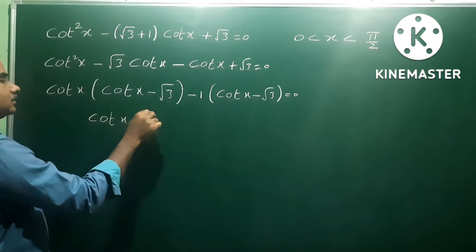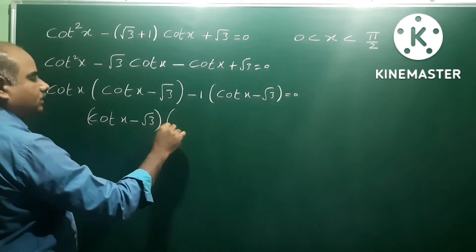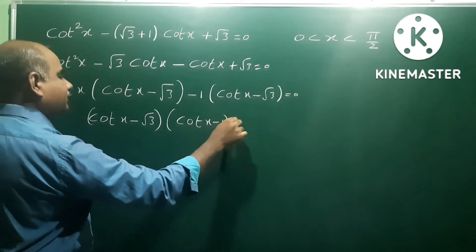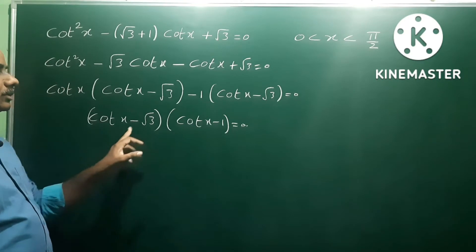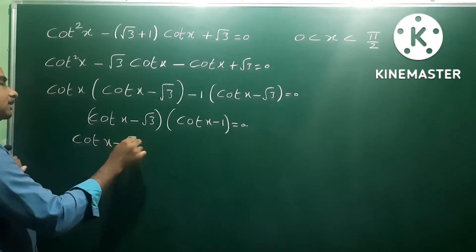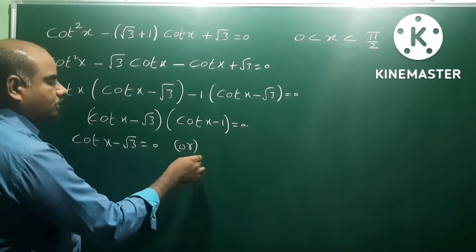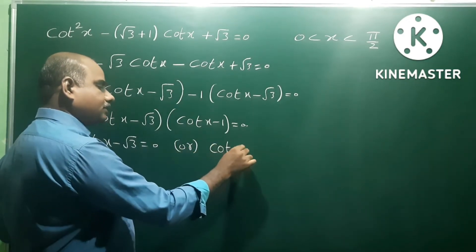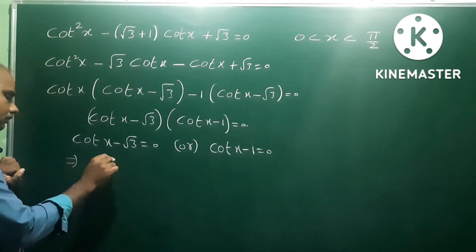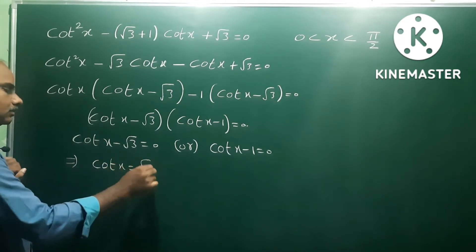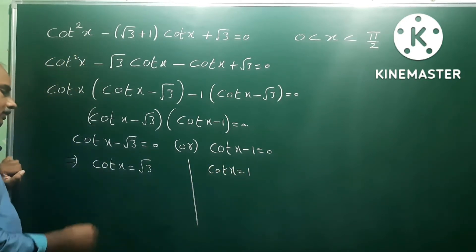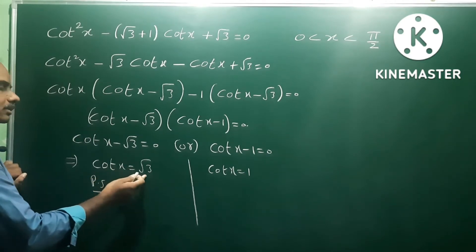So cot x minus √3 is equal to 0, and cot x minus 1 is equal to 0. That implies cot x is equal to √3, or cot x is equal to 1. Now we find the principal solutions.